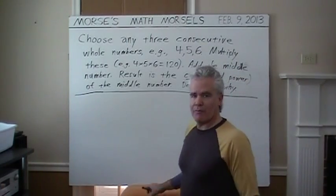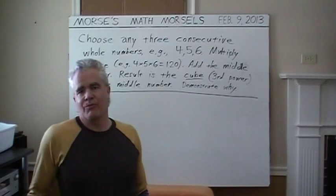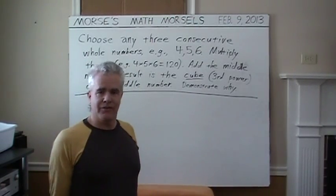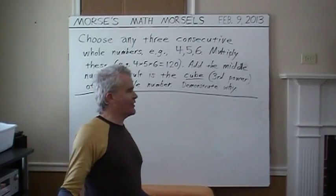And the whole numbers are the familiar counting numbers we all use, starting at 0, 1, 2, 3, 4, 5, 6, etc.